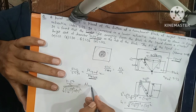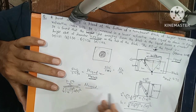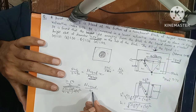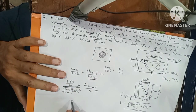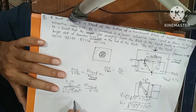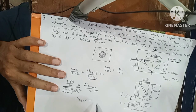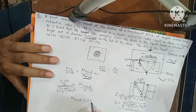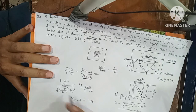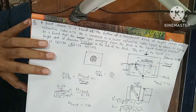Calculating µ_liquid: µ_liquid = 2.72 × (11.54/2) / √((11.54/2)² + 10²) = 1.36. So the refractive index of the liquid is 1.36, which matches the correct answer option.